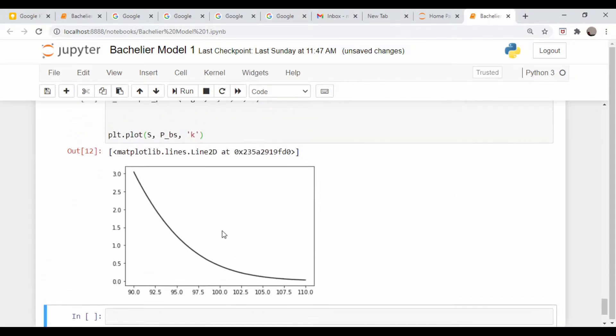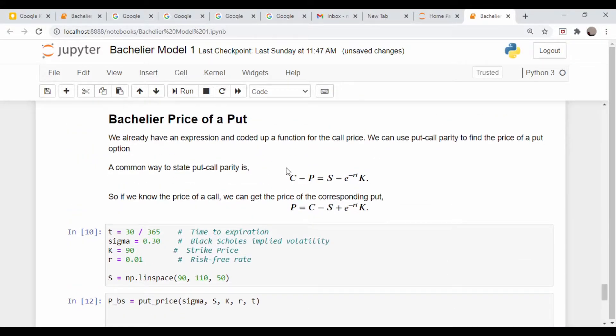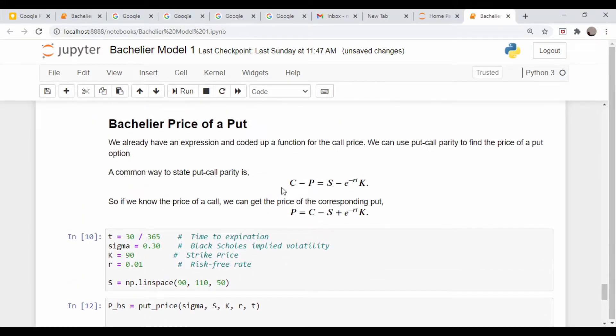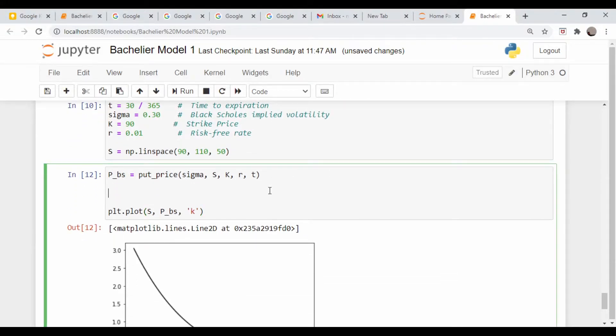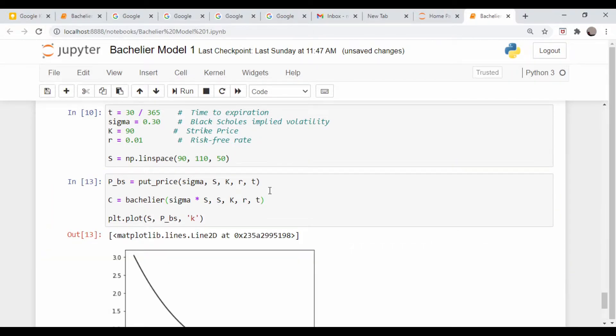So how do we get our Bachelier? We're going to figure out the price of a call, which is essentially what we did in the last video. I'm going to call that price C, and that's equal to our Bachelier function. I probably should have called it call or something. Sigma, and we need to adjust by the stock price, see the last video for that. And then we go S, K, R, and T. Does this run? Excellent.